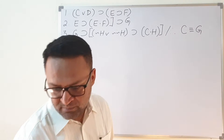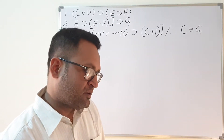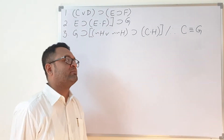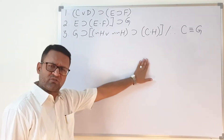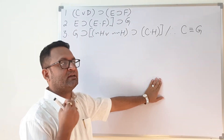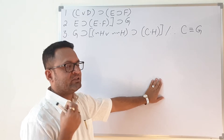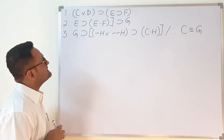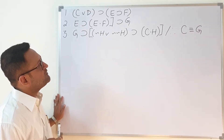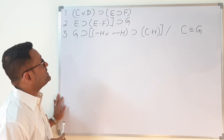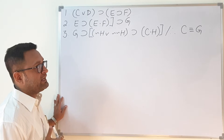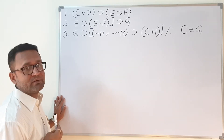This is question number 6 on page number 61 in your book, so you can refer to it there. It is an unsolved question — a good one to solve, not very lengthy, but you need to figure out how to approach it. The premises are: C·D implies E implies F; E implies E·F implies G; G implies negation of H; double negation of H implies C·H. Therefore: C triple bar G.